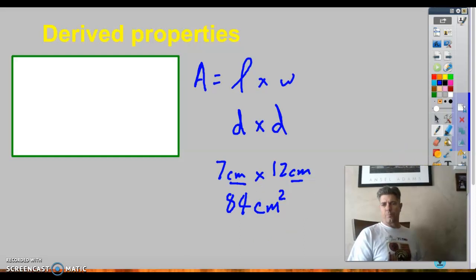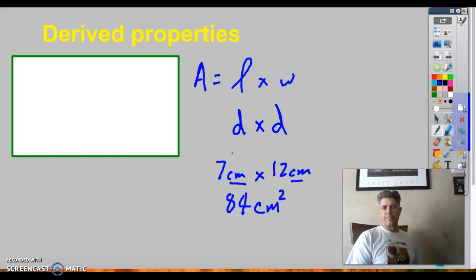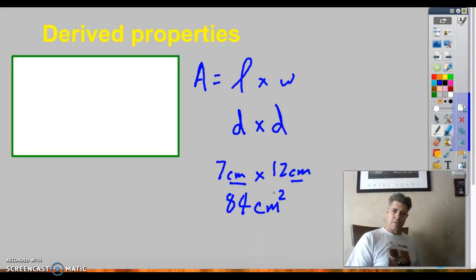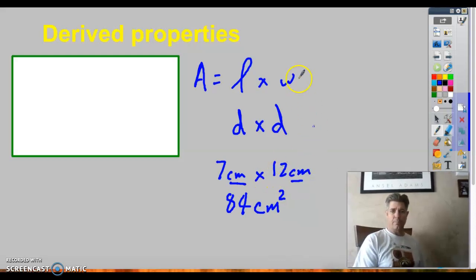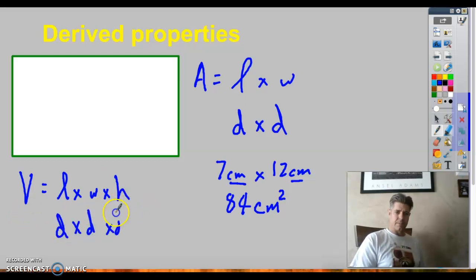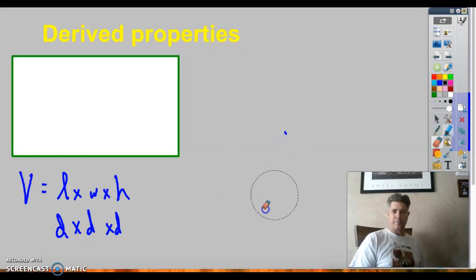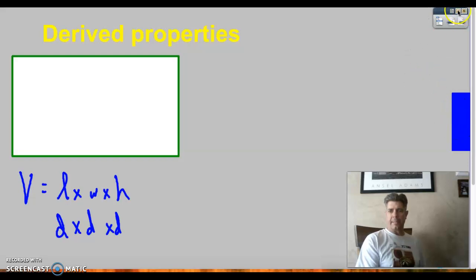If we were doing something that had three dimensions, like volume, the equation for volume is the length times the width times the height. Which are all just distance. So distance times distance times distance. Here's a box, for example, when you're talking about a three-dimensional space.